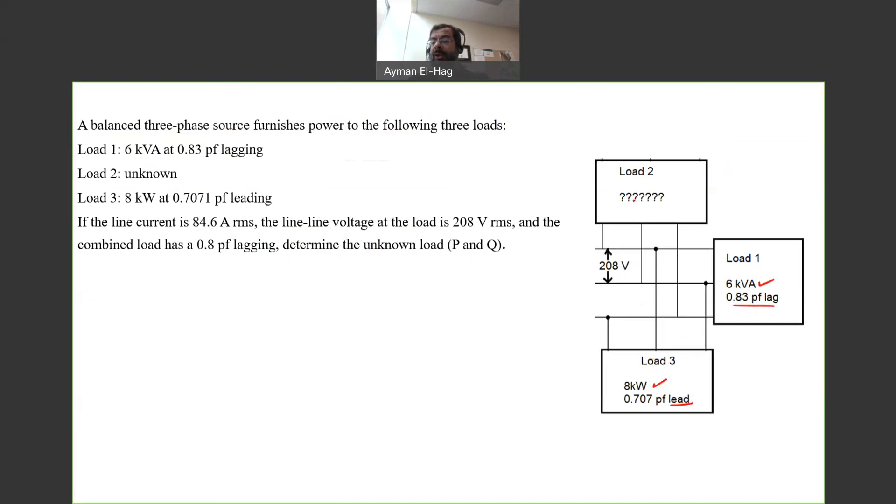What we don't know is load two. We don't know anything about it, but we have some information about the total supply that gives power to these three parallel loads. We know that the line-to-line voltage is 208V and the line current that supplies these three loads is 84.6 amps.